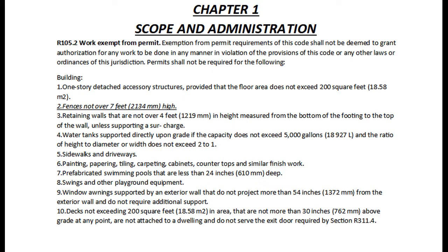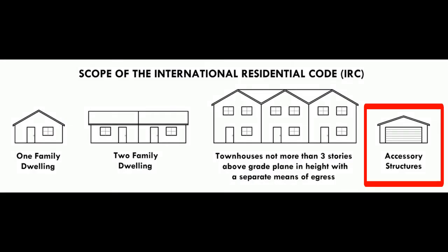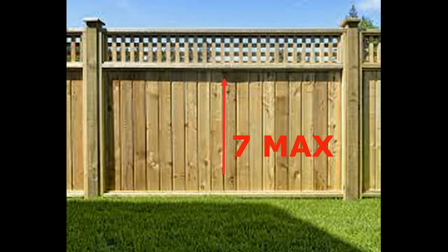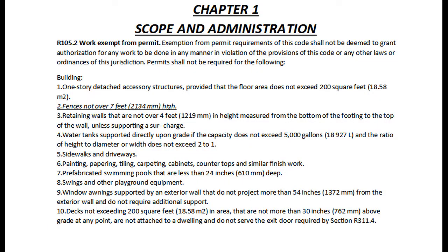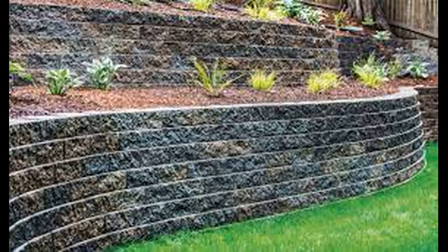Building: 1. One-story detached accessory structures, provided that the floor area does not exceed 200 square feet. 2. Fences not over 7 feet high. 3. Retaining walls that are not over 4 feet in height, measured from the bottom of the footing to the top of the wall, unless supporting a surcharge.